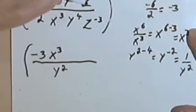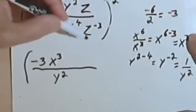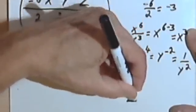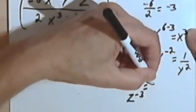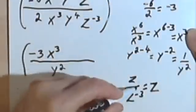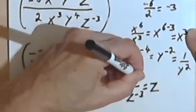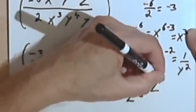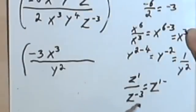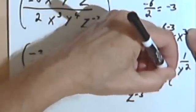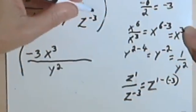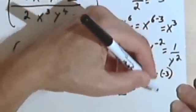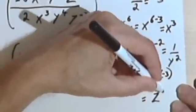The last thing I have is z over z to the negative 3. This z, even though we don't see an exponent, has an exponent of 1. So that's z to the first power minus the exponent in the denominator, which is negative 3. And 1 minus negative 3 is the same as 1 plus 3, which is 4. So that's going to be z to the fourth.